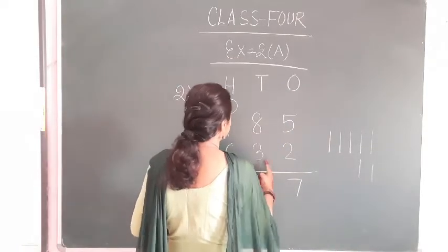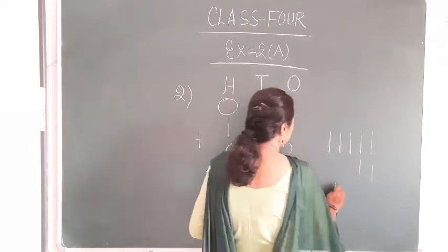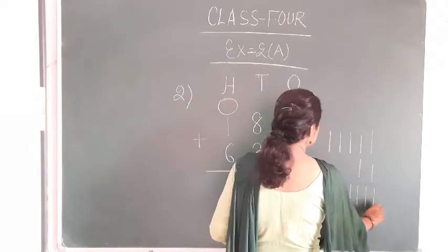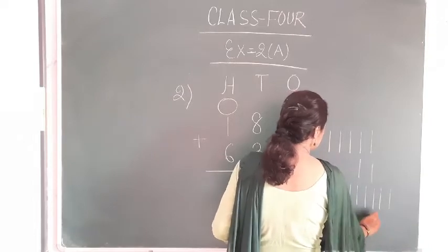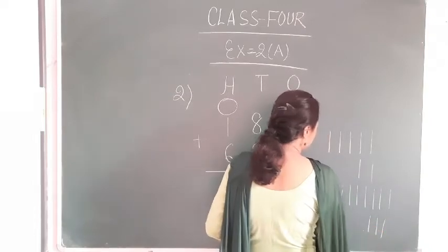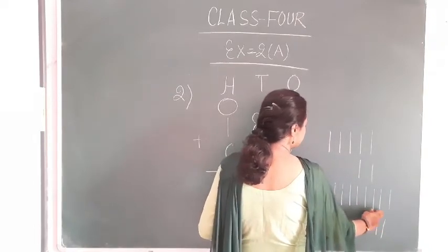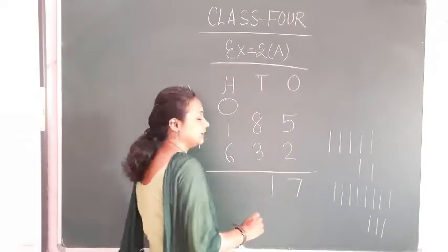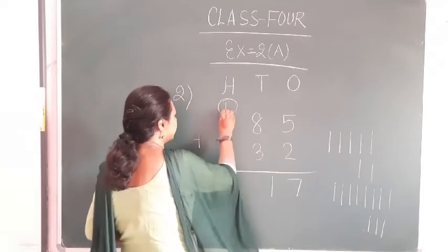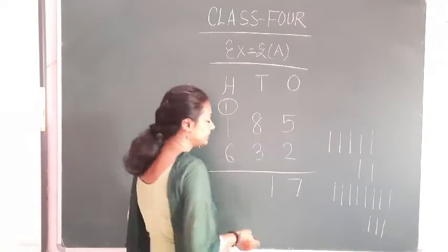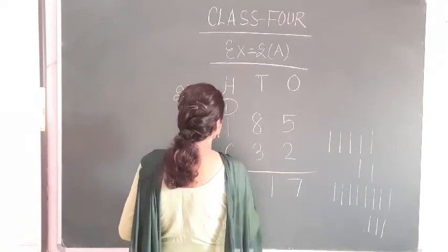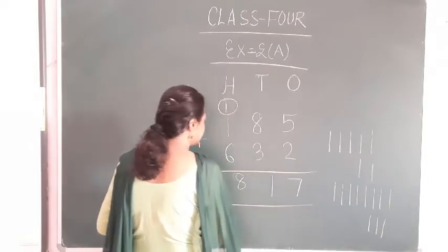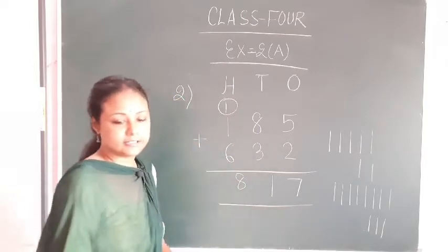Then 8 plus 3. Drawing 8 lines: 1, 2, 3, 4, 5, 6, 7, 8. And 1, 2, 3. Total: 1, 2, 3, 4, 5, 6, 7, 8, 9, 10, and this is 11. So 11 — write 1 and carry 1. Then 6 plus 1 is 7, plus 1 is 8. This is 8, 1, 7.